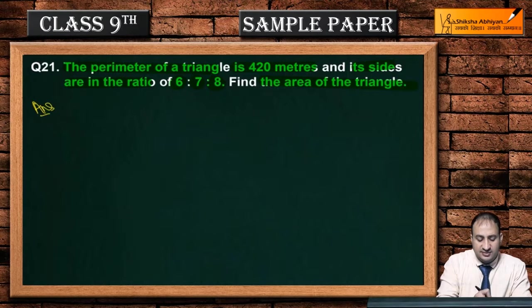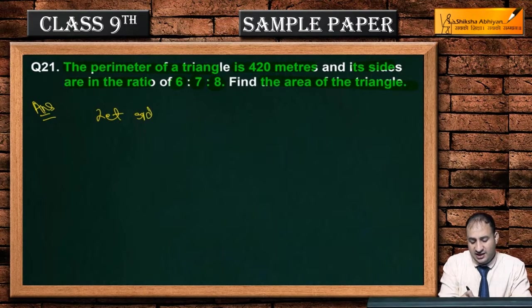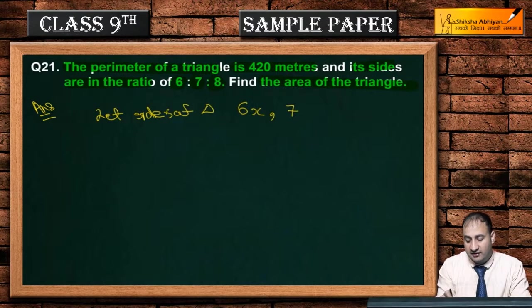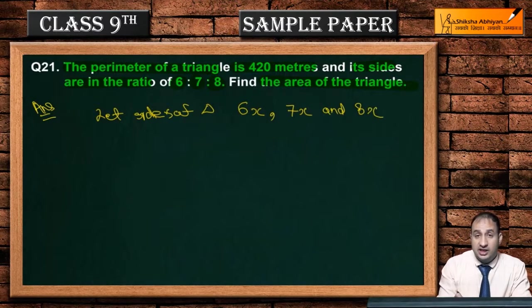Let the sides be 6x, 7x, and 8x. The perimeter equals 420, so 6x plus 7x plus 8x equals 420. That gives us 21x equals 420, so x equals 20. Therefore, the sides are 120 meters, 140 meters, and 160 meters.